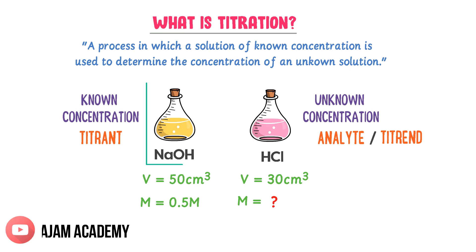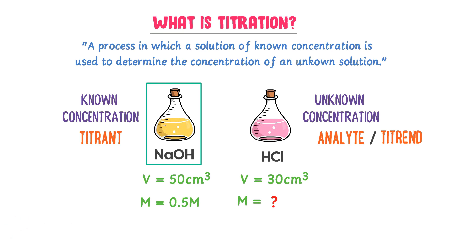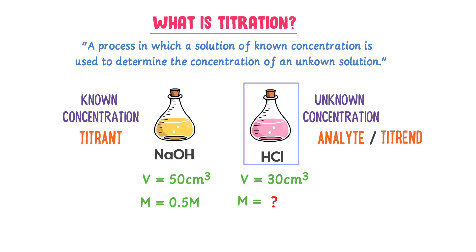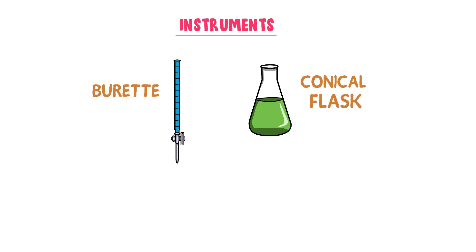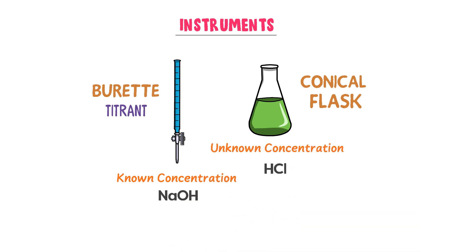In titration, we use the solution of known concentration to find the concentration of the unknown solution — this whole process is called titration. You should also learn about the main instruments used in titration. The primary instrument is the burette and the other is the conical flask. In the burette we place the titrant, such as sodium hydroxide, and in the conical flask we place the analyte of unknown concentration. Remember: titrant goes in the burette and analyte goes in the conical flask.